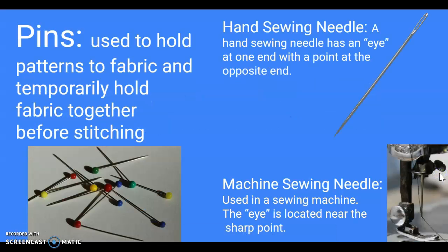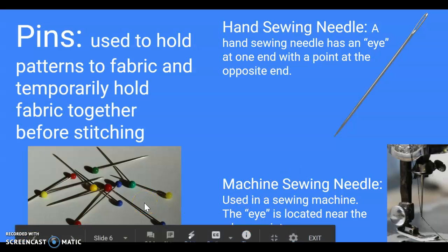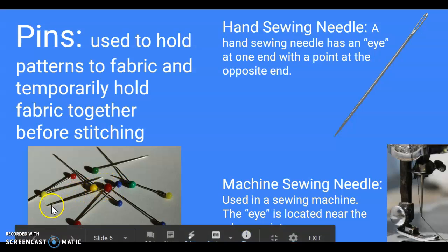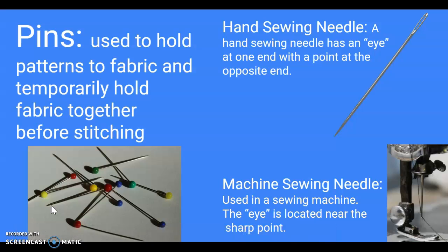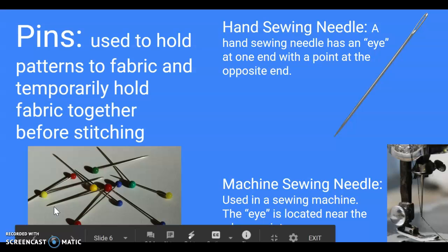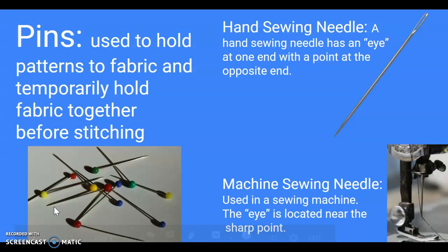We have pins and we have needles and there is a difference. You can see the pins here have a large part on one end opposite of the sharp tip, and that's so they don't actually go all the way through fabric. They are meant just to hold two pieces of fabric together or hold them in place until you actually sew that part.